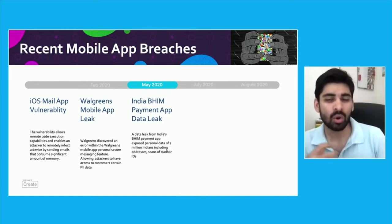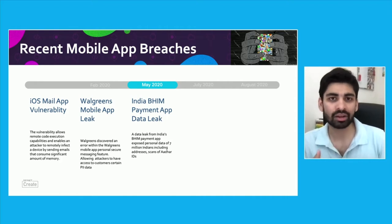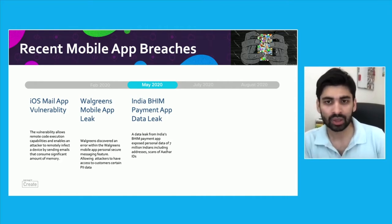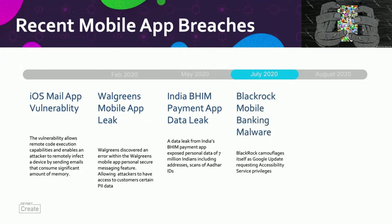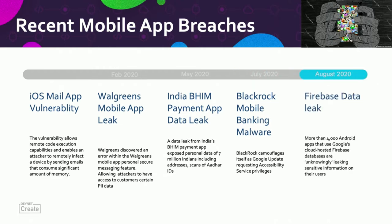In May of 2020, India's largest payment app, the Bheem payment app, had a data leak which exposed almost 7 million Indians including their addresses and scans of their Aadhaar IDs — which is like an SSN, a unique identifier for citizens of India. In July 2020, we had the BlackRock mobile banking malware which camouflaged itself as a Google update and requested accessibility settings, resulting in tracking and extracting information from apps.